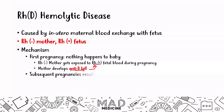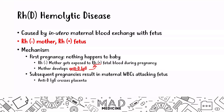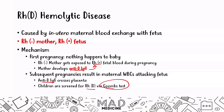In subsequent pregnancies, the mother's immune system will attack the fetus because the anti-D IgG can actually cross the placenta. It coats the fetal red blood cells, and white blood cells then attack the fetus. Children are usually screened for RH status via the Coombs test, which we've covered in previous videos.